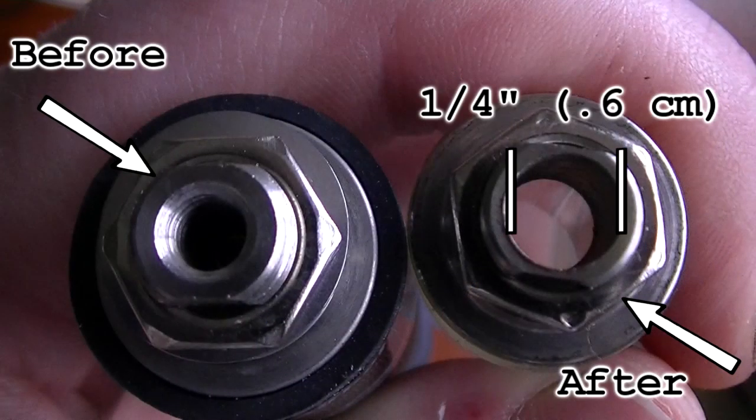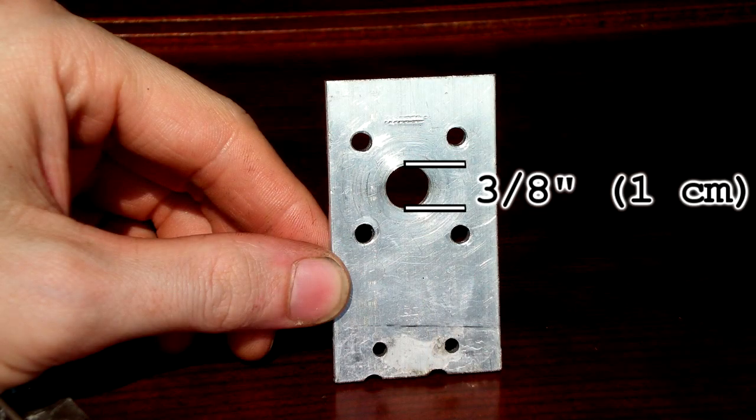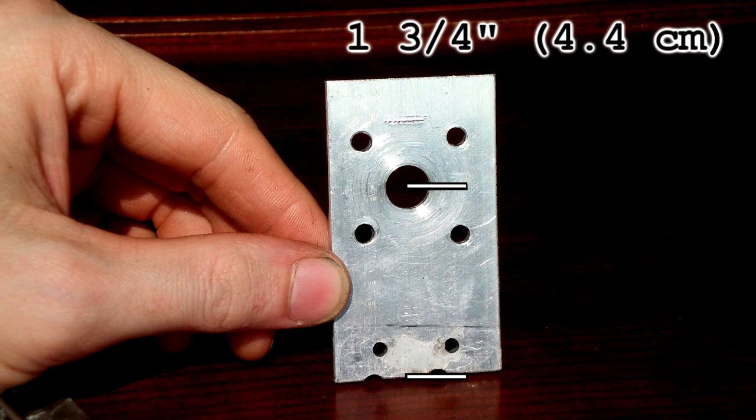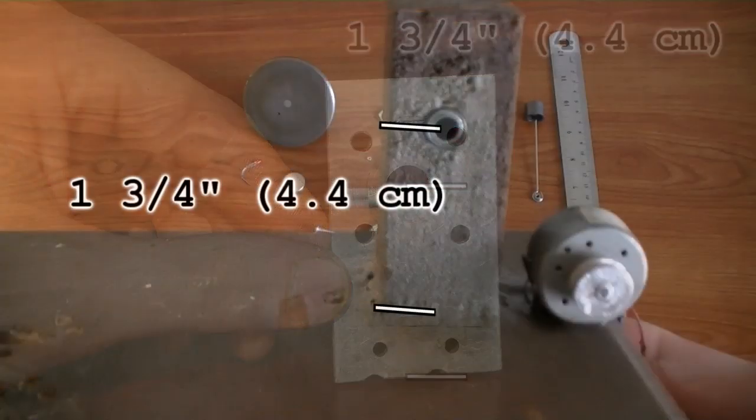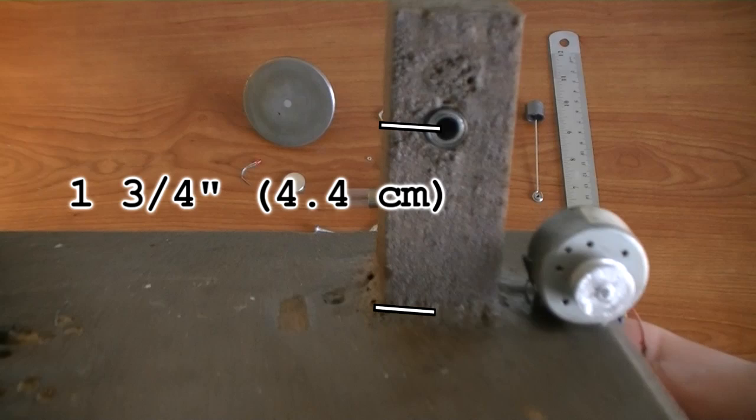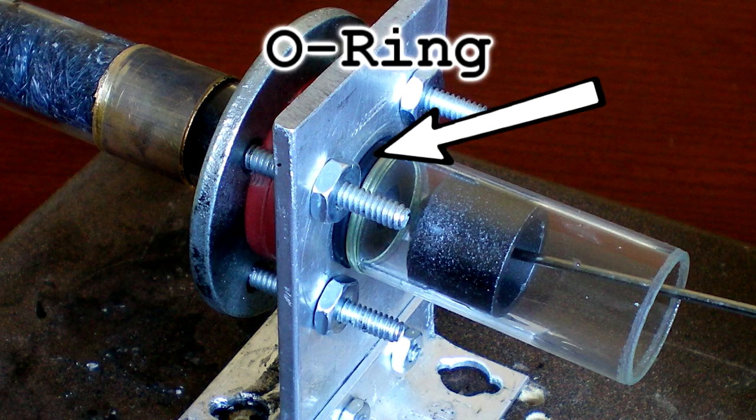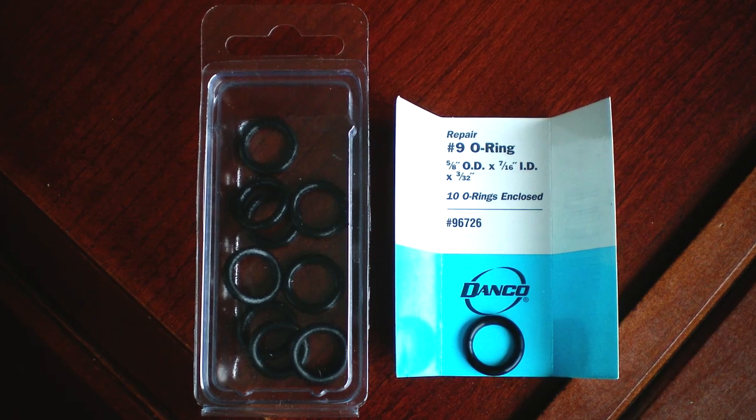The actuator fits through a 3 eighths hole in the aluminum support column. The center of this hole is 1 and 3 quarters of an inch from the bottom which is the same height as the center of the hole in the flywheel support column. I added this black rubber o-ring to create an airtight seal between the metal part of the actuator and the aluminum support column.